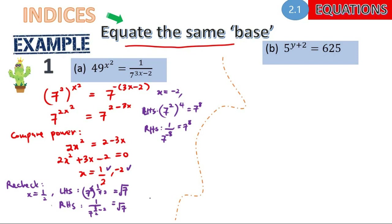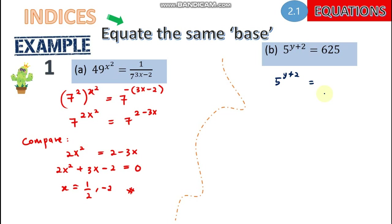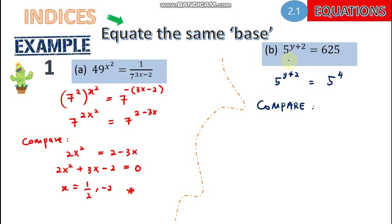Using the next example with base 5: we have 5 to the power of y+2, and 6 to the 5th can be expressed as 5 to the power of 4. So again we compare the powers and should have y + 2 = 4.